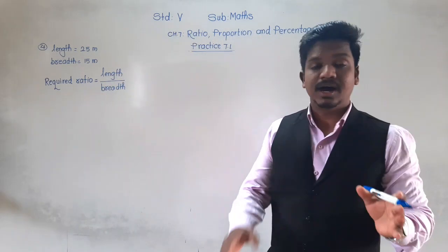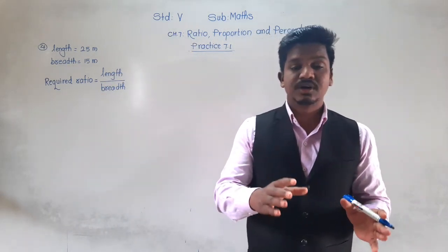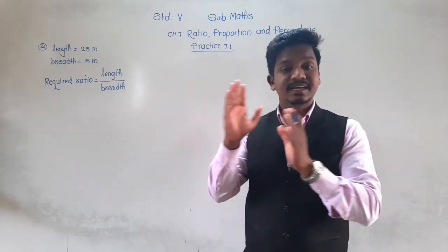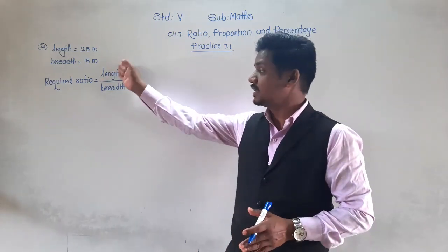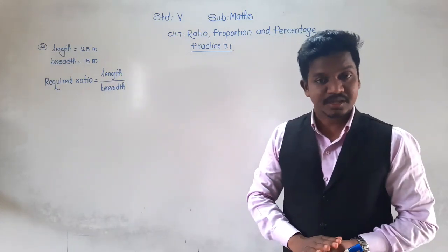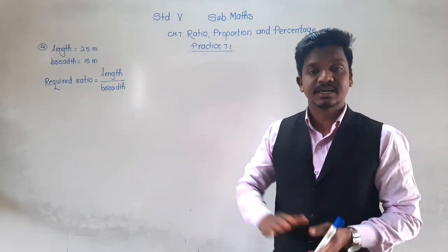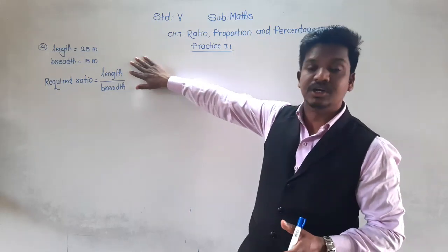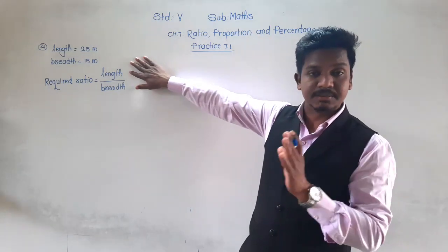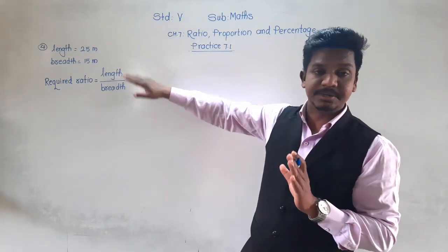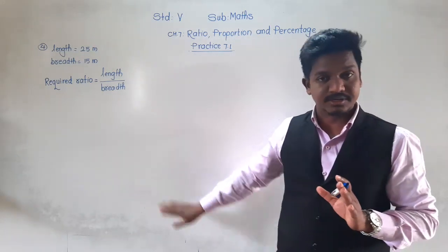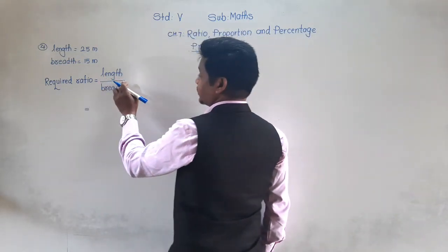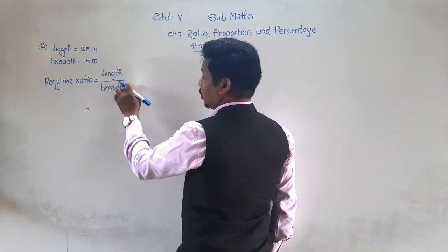If they had asked: find the ratio of breadth and length, then breadth would be written in the numerator and length in the denominator. So follow the sequence — if they ask length first, then length becomes the numerator and breadth the denominator. The required ratio is length upon breadth.